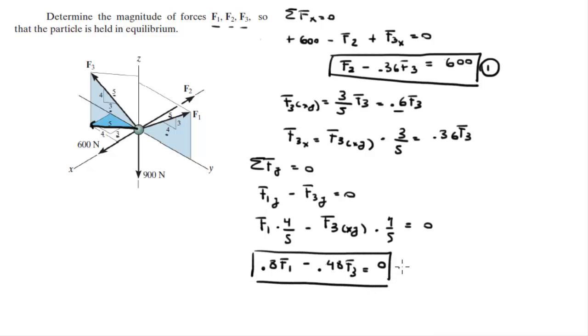And last but not least, sum of the forces in the Z direction is equal to 0. So, we got 900 going straight down, that's negative 900, plus the Z component of F3, plus the Z component of F1. Because the 600 and F2 are pointing in the plane of the XY, they have no Z component. The Z component of F3 is given by F3 times 4 over 5, because it's this component right here going up.